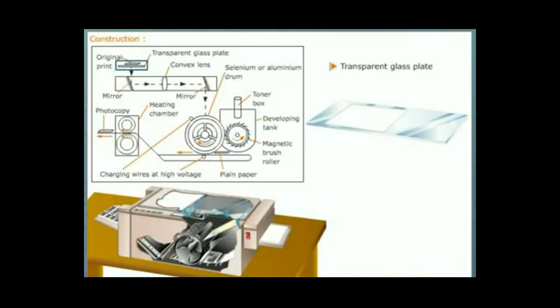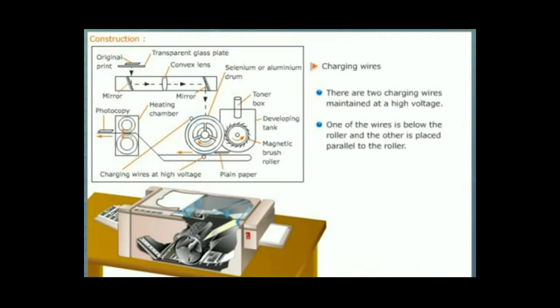The document to be photocopied is then covered with a plastic sheet. There are two charging wires maintained at high voltage. One of the wires is fixed below the roller and the other is placed parallel to the roller.